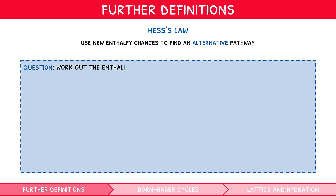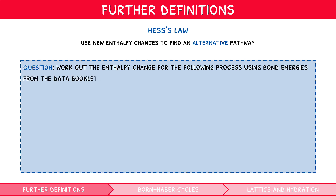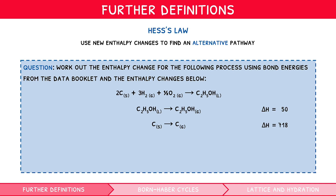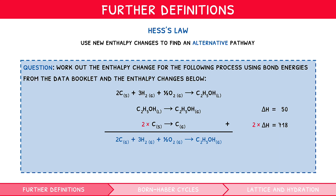Work out the enthalpy change for the following process using bond energies from the data booklet and the enthalpy changes below. First, we must convert all species to the gaseous state. The first reaction must occur once to convert C₂H₅OH, and the second reaction twice to convert both carbons. Thus, our overall enthalpy change so far is 50 + 2 × 718, which gives 1486.